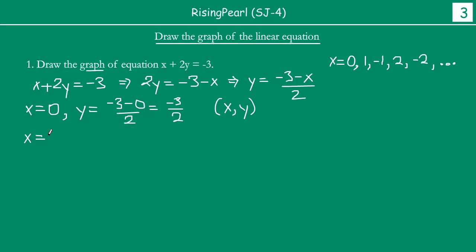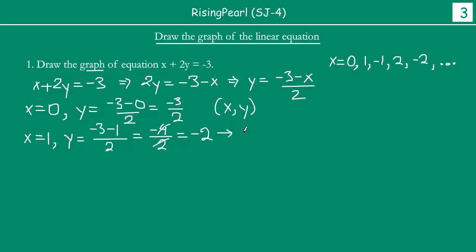If we take x = 1: y = (−3 − 1) / 2 = −4 / 2 = −2. So here we get one value: x = 1, y = −2.